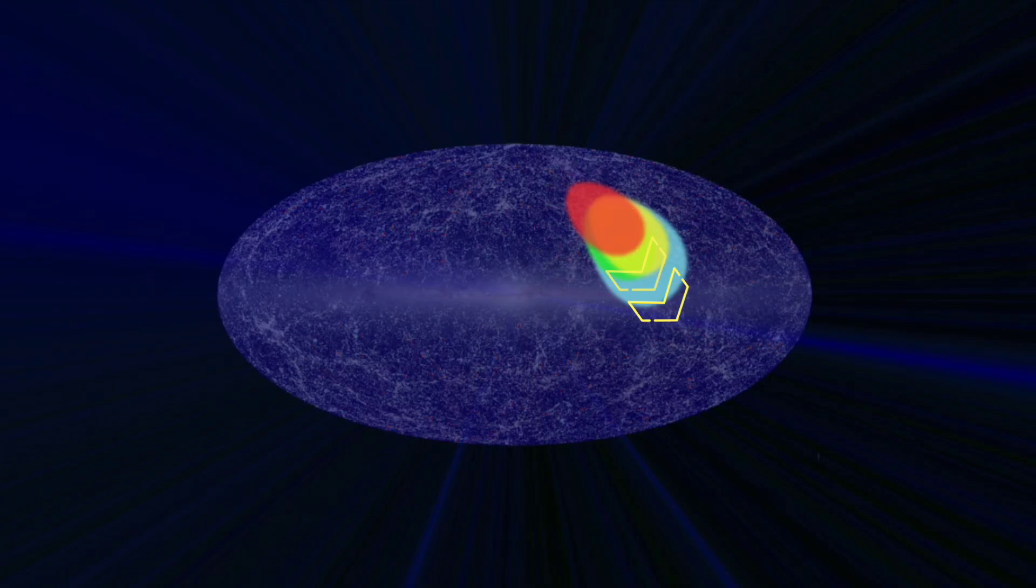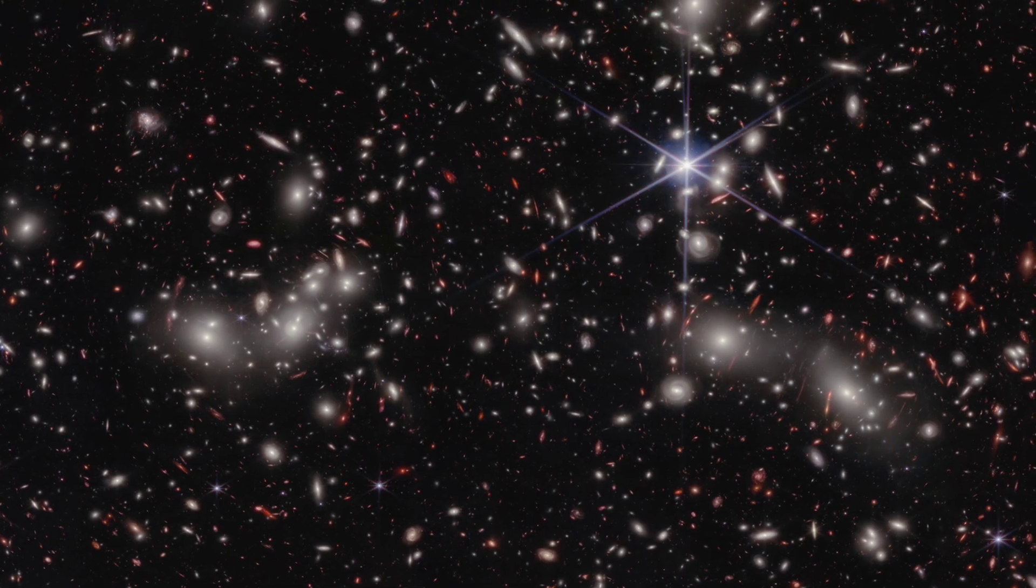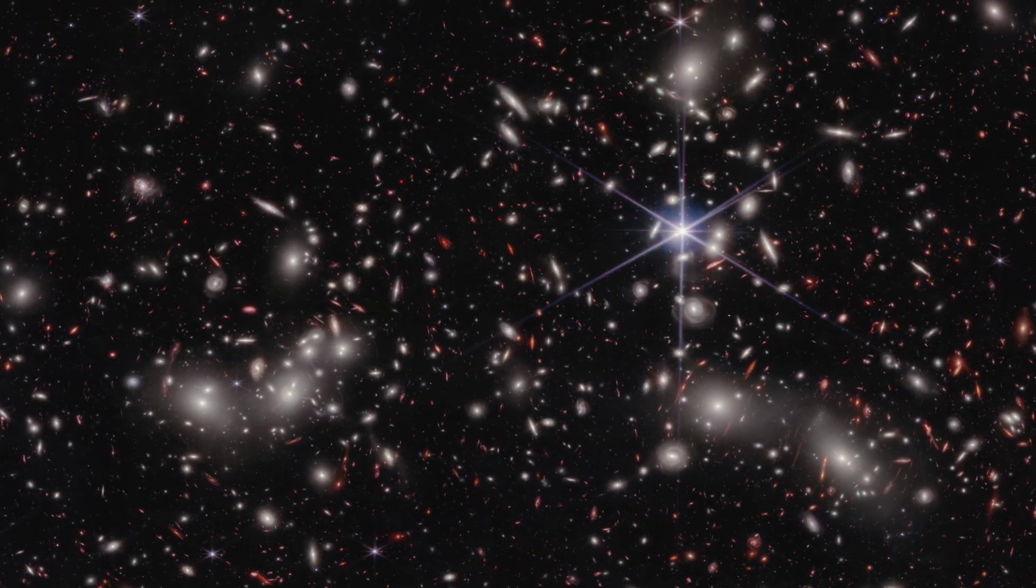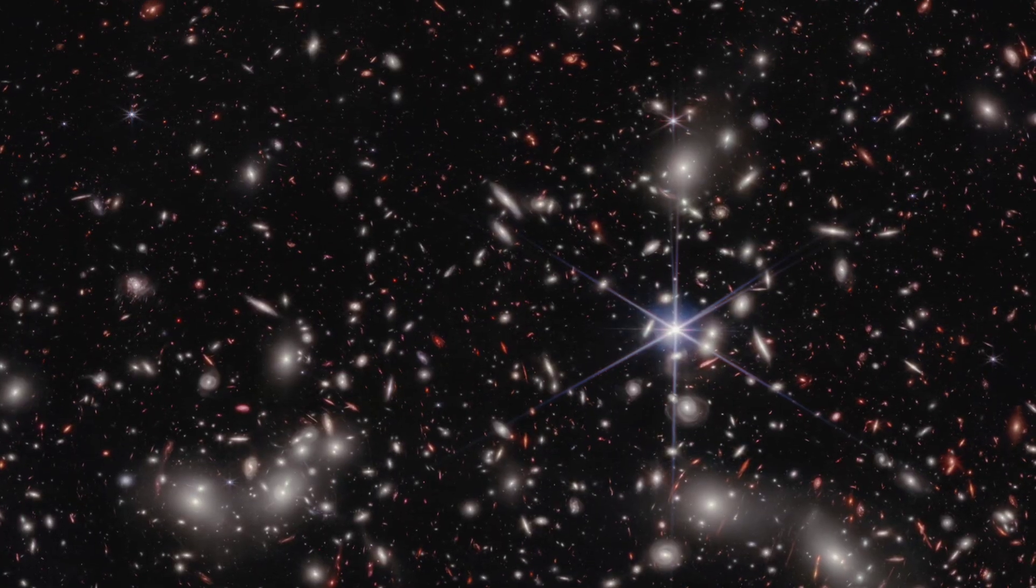Scientists are thinking that there must be something in that direction of our observable universe that is affecting the motion of galaxies. Here are images captured by the Webb Telescope of massive galaxy clusters moving toward an unknown attractor.